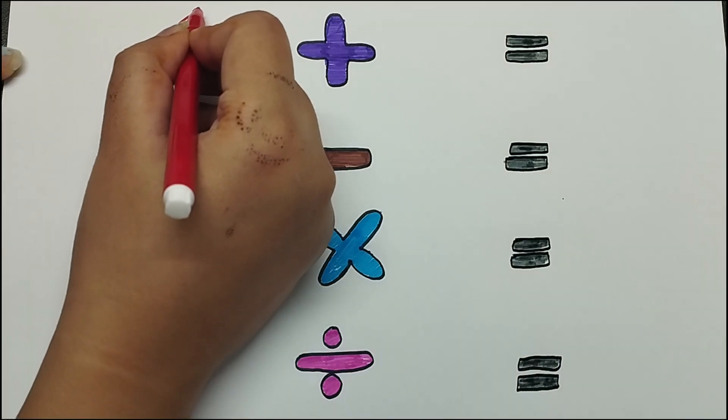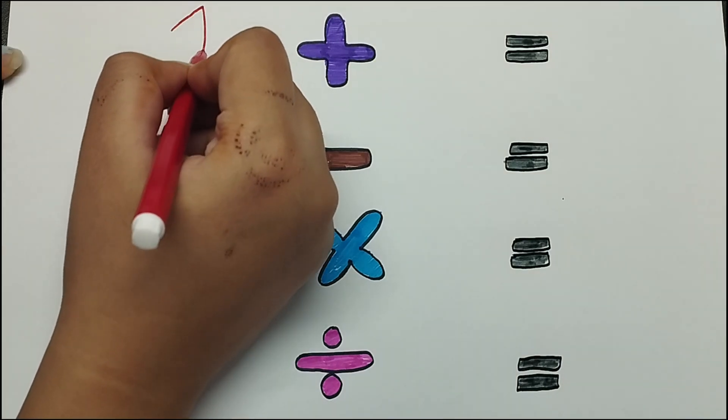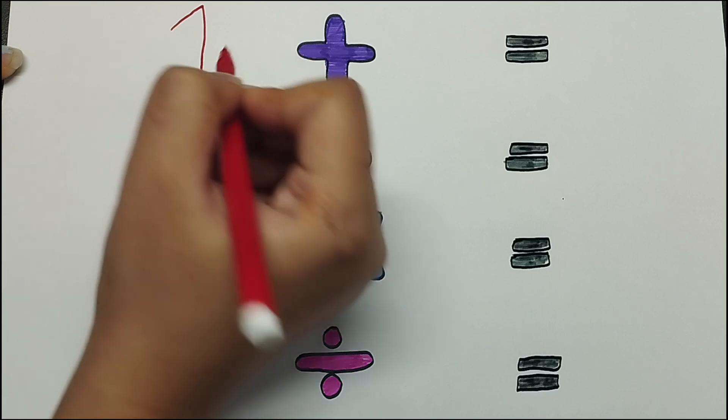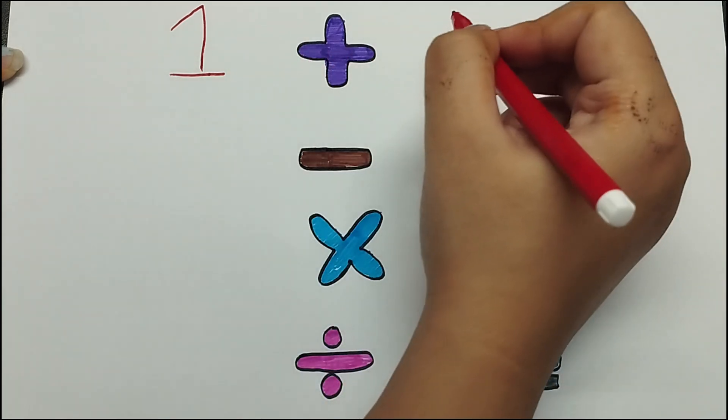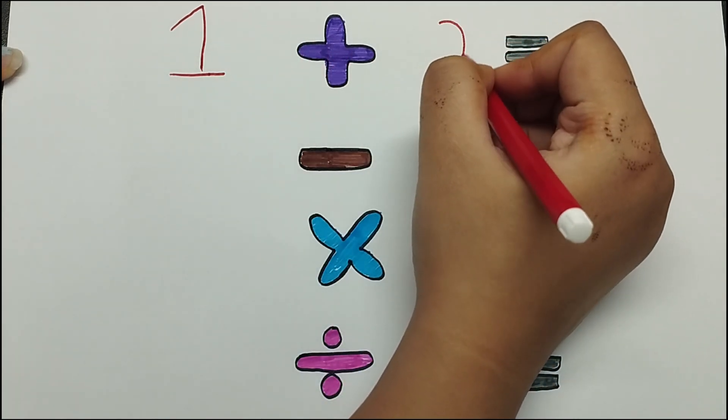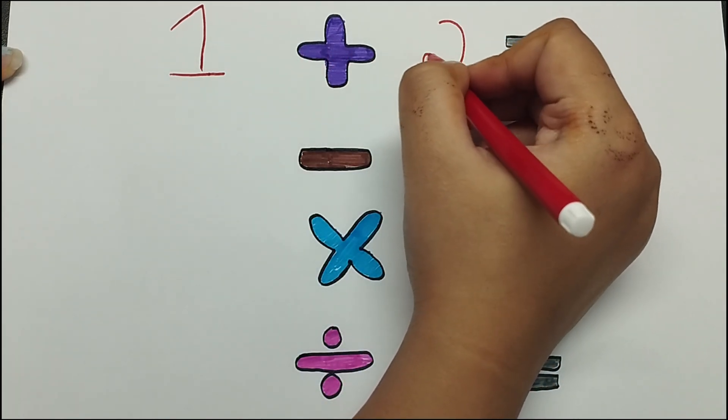Now let's add numbers. 1 plus 2 is equals to 3.